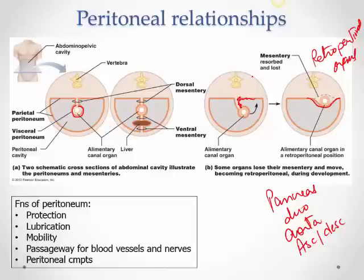Pancreatic cancer has a poor prognosis because it's diagnosed late. One reason is that it's on the posterior abdominal wall with many organs covering it, so swelling is not easily seen or felt. By the time symptoms appear, it has spread considerably, making the prognosis very bad.